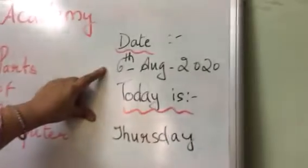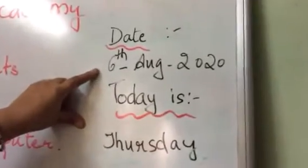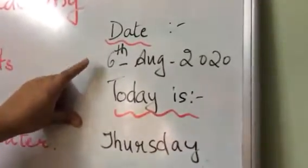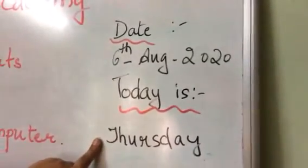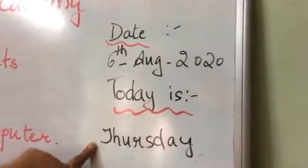Today we will do computer activities. But before that, let us see what is the day today. Today is 6th August 2020, and today is Thursday.